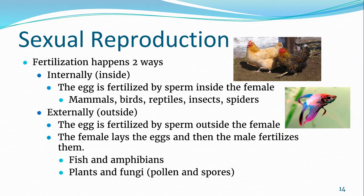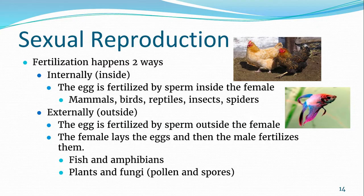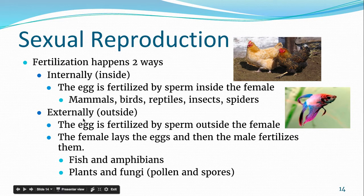Fertilization in sexually reproducing organisms can occur in one of two ways: either internally — generally within the female's reproductive tract, where eggs are fertilized by sperm within the organism, as seen in mammals, birds, reptiles, and insects — or externally, where the gametes fuse outside the individual's body. A very common example: most fish reproduce this way, as well as amphibians. Plants and fungi will fertilize using pollen or spores.